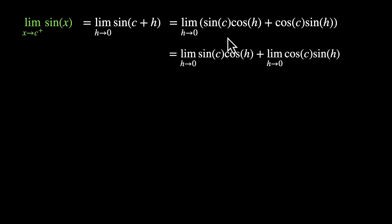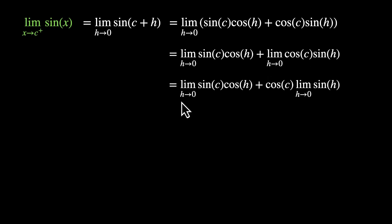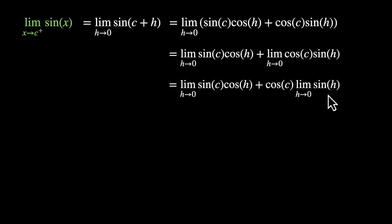Let's spread the limit: limit h→0 of sin(c)cos(h), plus limit h→0 of cos(c)sin(h). Since cos(c) is constant, we bring it out: sin(c) · [limit h→0 cos(h)] + cos(c) · [limit h→0 sin(h)]. This is where our assumption comes in handy — limit h→0 of sin(h) is equal to 0.